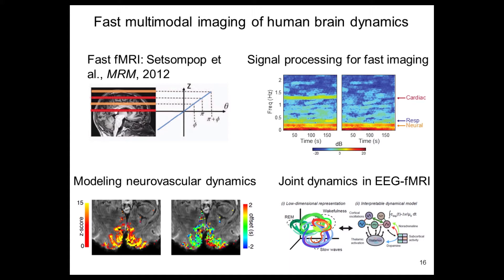We image the brain at the same time as we perform electrophysiology with EEG, giving us really rich simultaneous datasets where you have electrical activity of the brain at the same time as a high-resolution image of its deep brain circuits. We're moving towards computational methods where we can extract the really low-dimensional dynamics that exist in these very complex datasets.